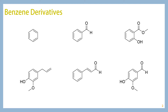We're going to look at some benzene derivatives. The interesting thing about aromatic compounds is that they can be found just everywhere. Benzene is a very stable structure, and so you tend to find aromatic compounds and benzene derivatives all throughout nature.